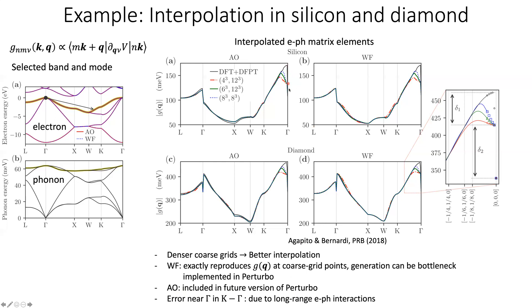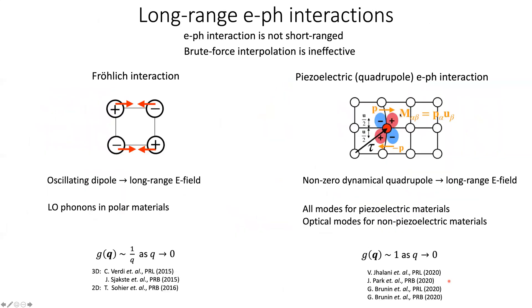Looking closely near the gamma point, there are errors between the interpolated results and the direct DFT results. These errors are due to long-range electron-phonon interactions. Such long-range interactions are not short-ranged, meaning that even with finer and finer coarse grids, the interpolation results will not match the direct DFT results. Therefore, brute-force interpolation is ineffective, and there are two major types of these long-range electron-phonon interactions.